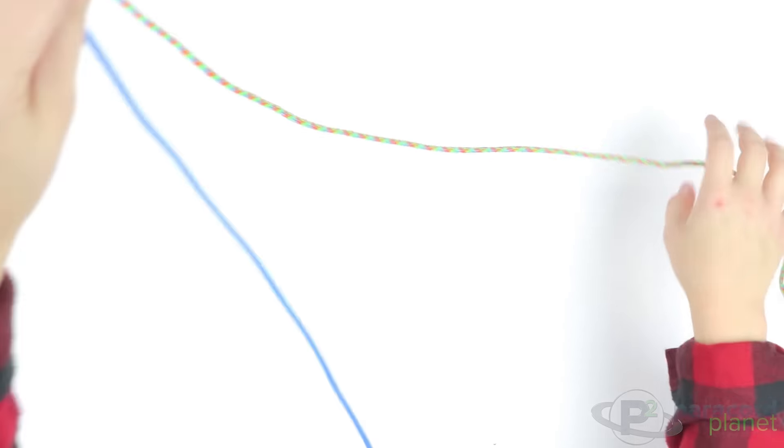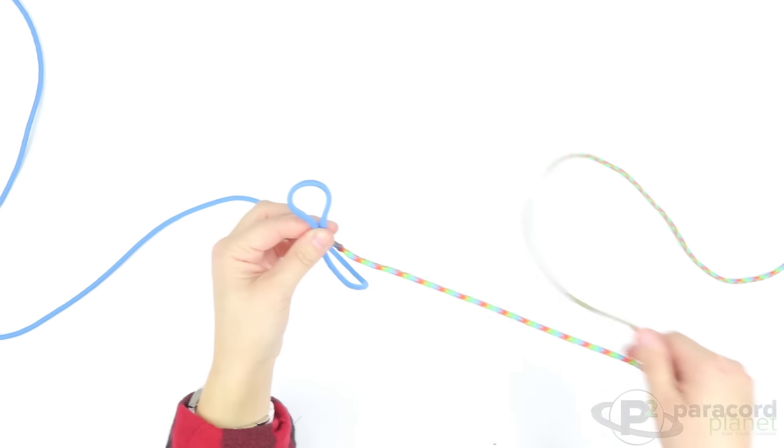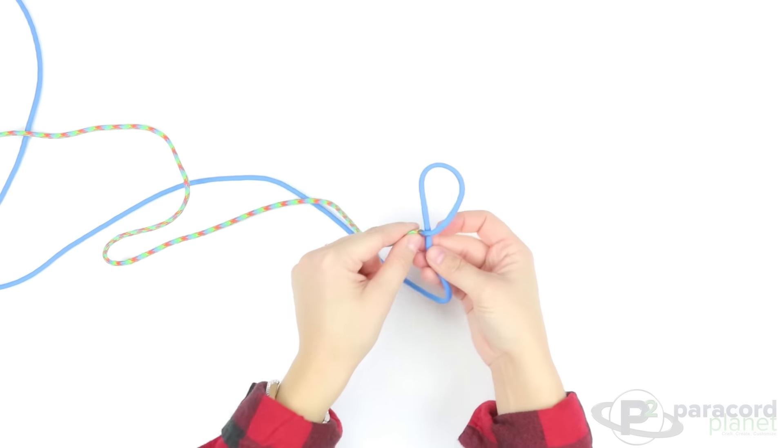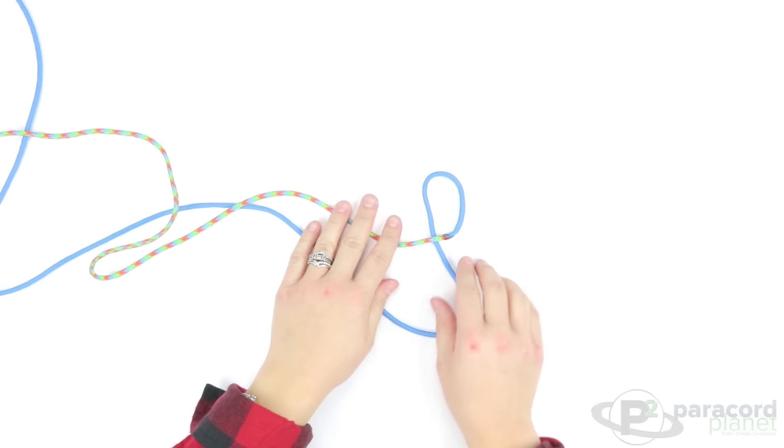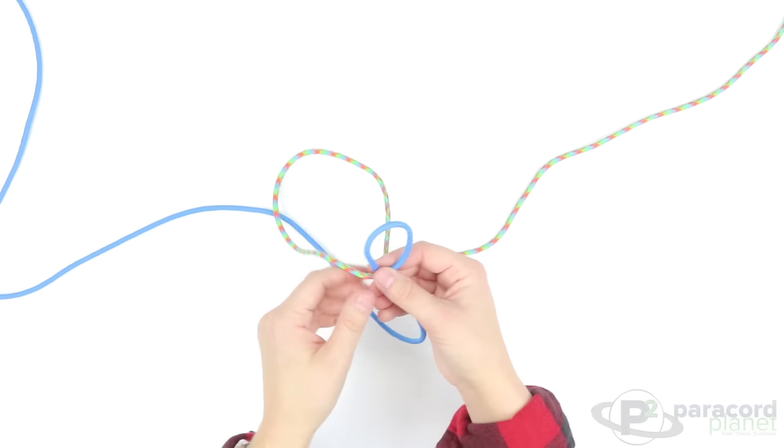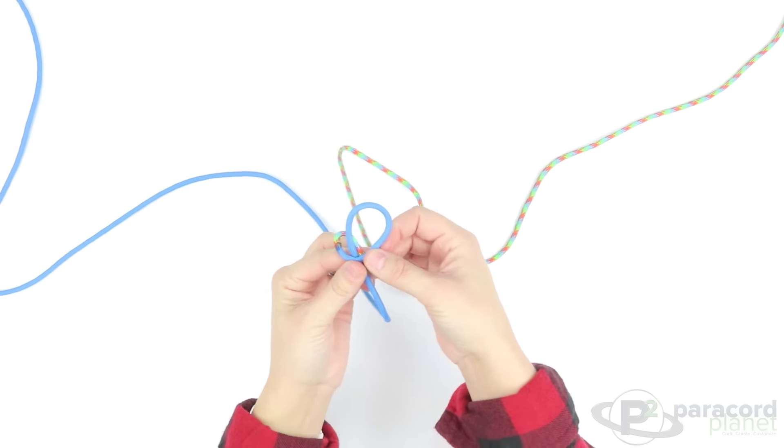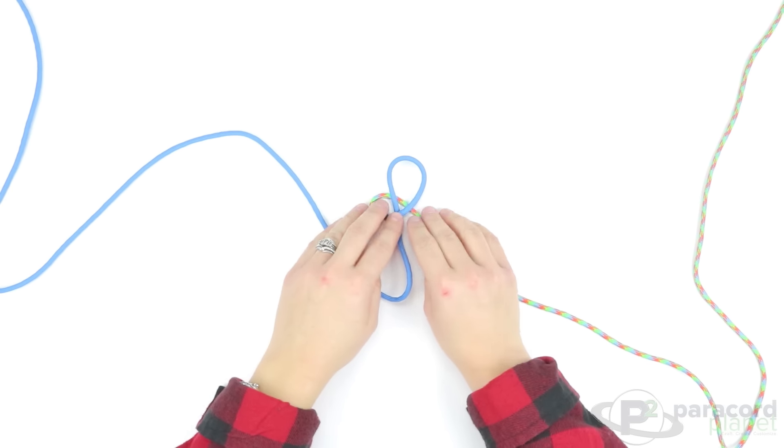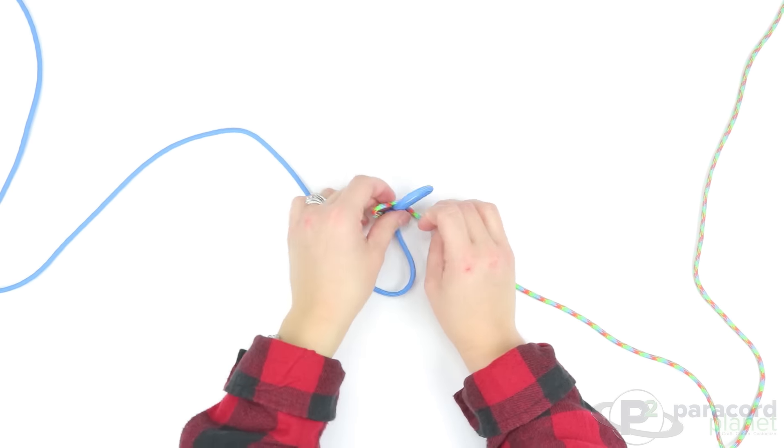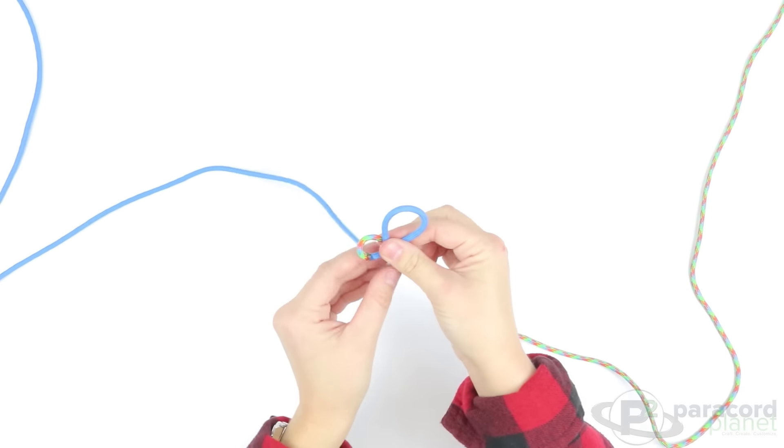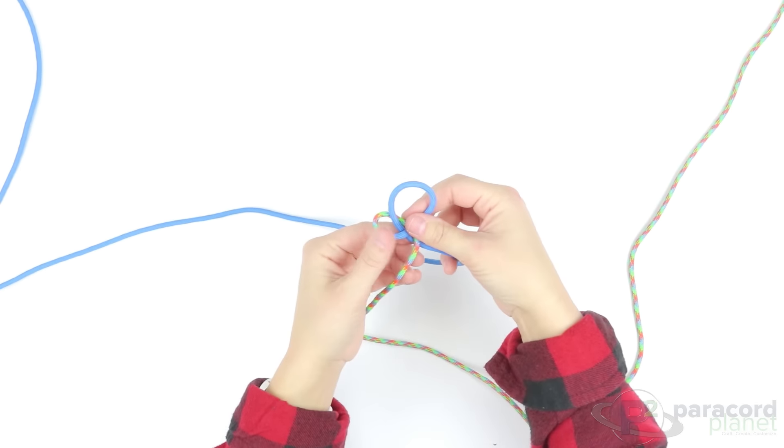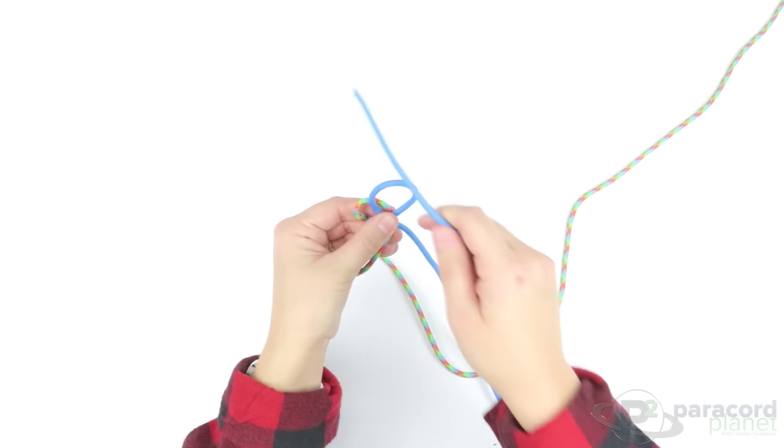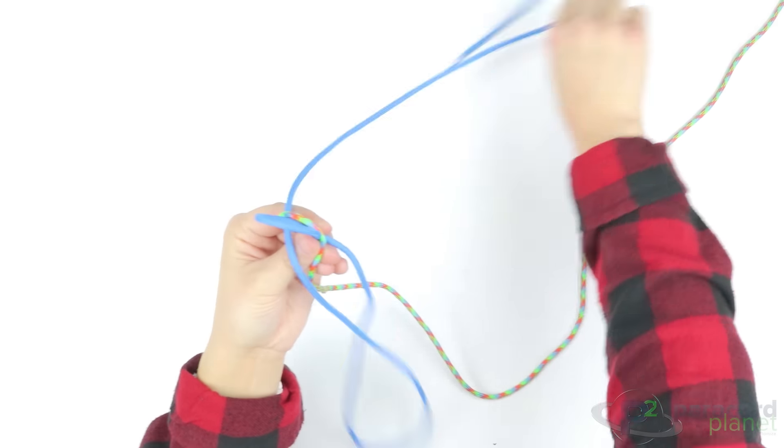First thing you'll do is take your cord on the right and make a loop over the base cord just like that. Take this now and flip it behind, so the loop that you just made will be on the left side. Then take the other cord—the cord that is on the left—and go behind the cord on the right and up through the loop, and pull that.